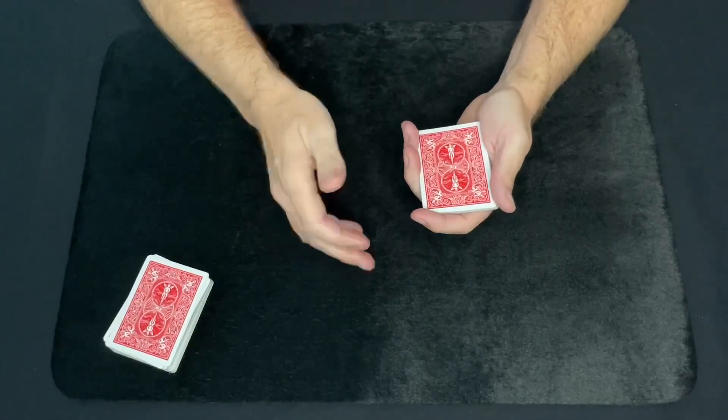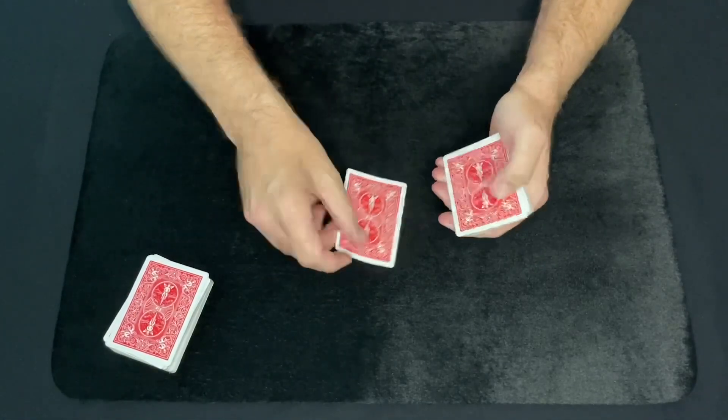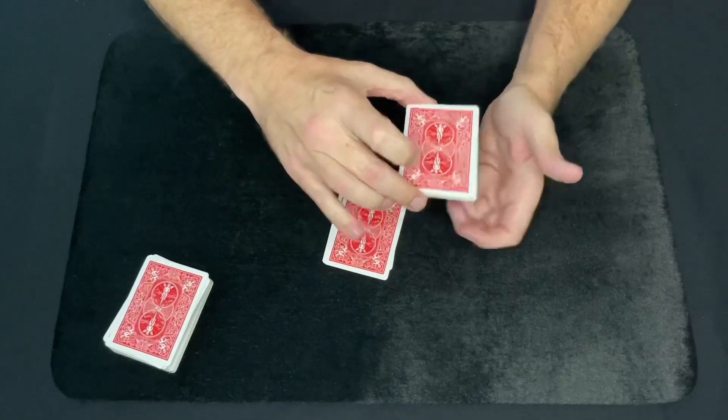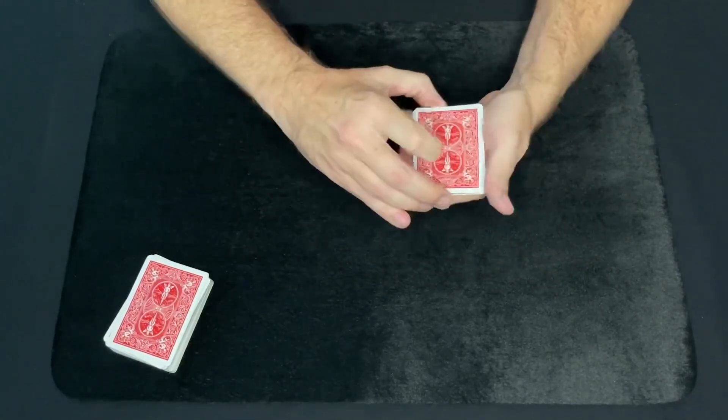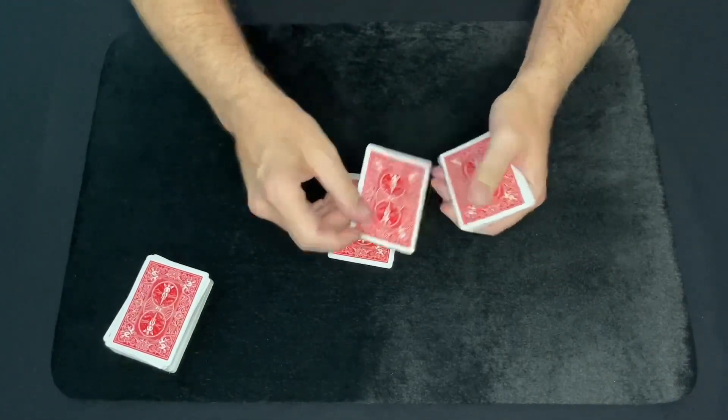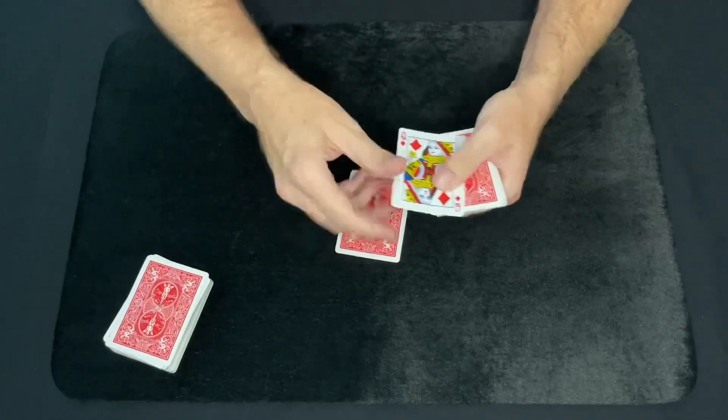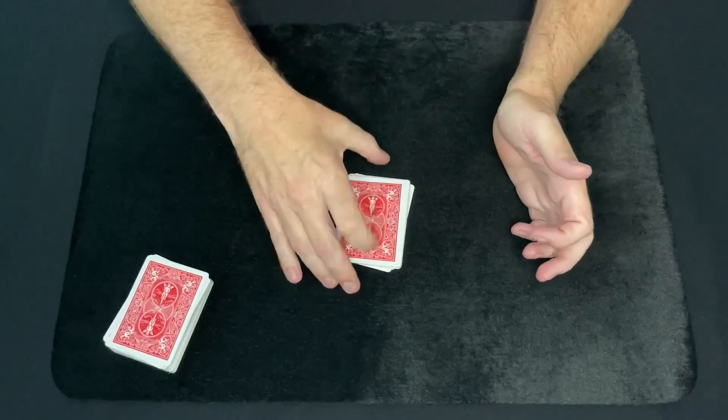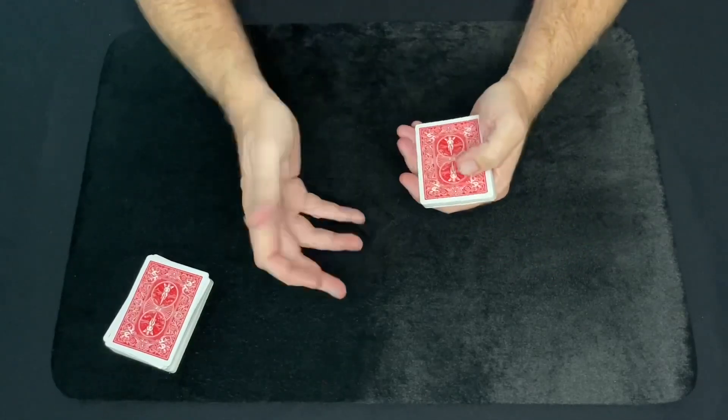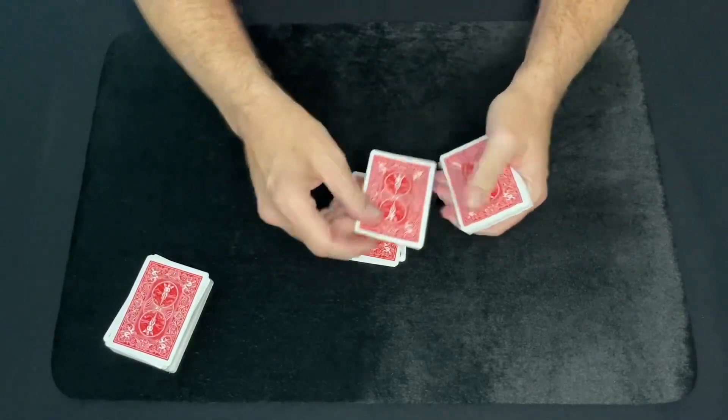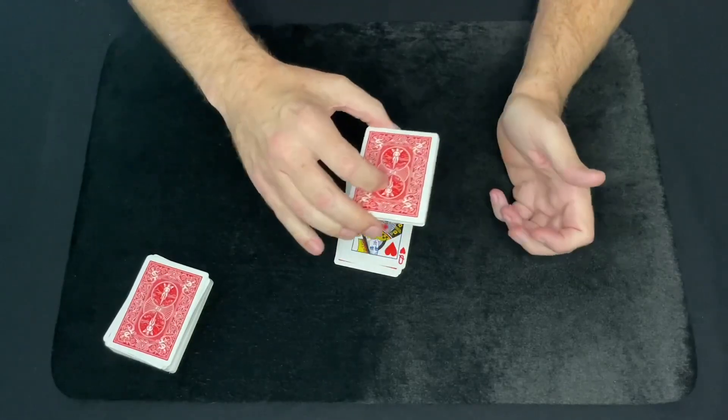Do it again, but with the word the, T-H-E. The remaining cards, just place them on top. Two T-W-O, remaining cards, place them on top. Red, R-E-D, remaining cards, place them on top. And then queens, Q-U-E-E-N-S, remaining cards, place them on top.